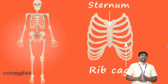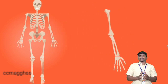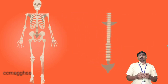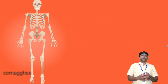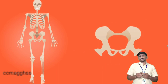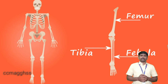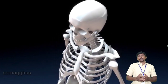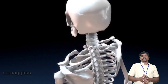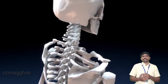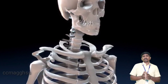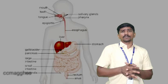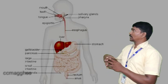The bones contain calcium and phosphorus. The bone marrow is producing blood cells. This is one of the important functions of the skeletal system — bone marrow produces blood cells.